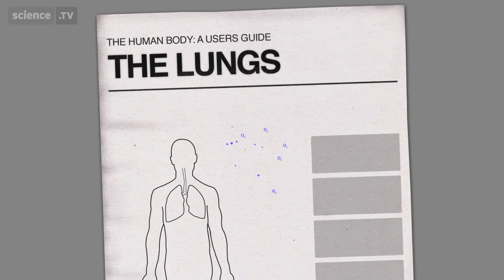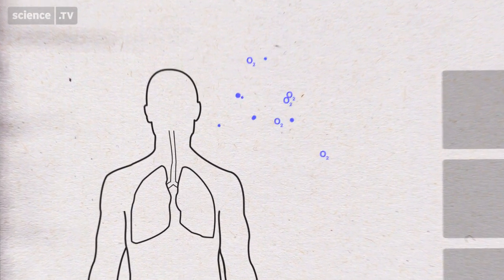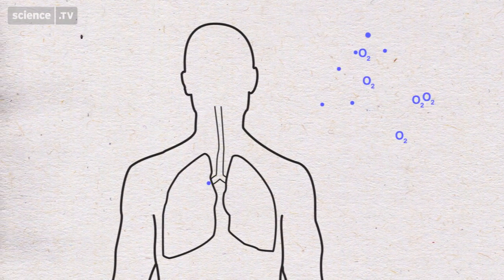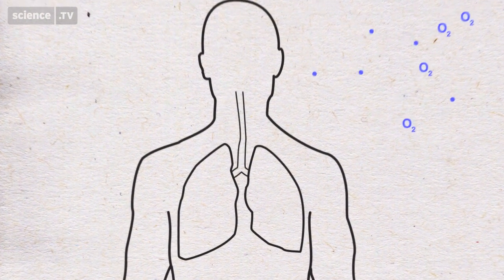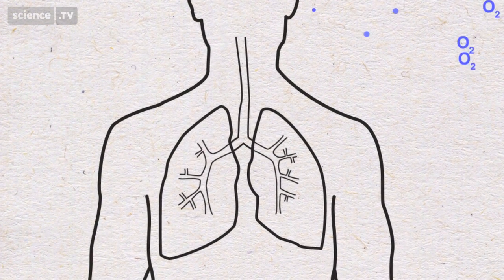So what do you reckon goes on in your lungs when you exercise? Your lungs are a bit of genius. They're designed to collect invisible fuel that's found in the air, and that's oxygen.